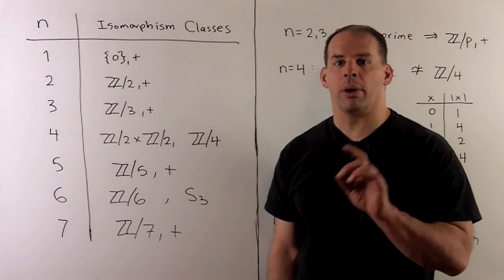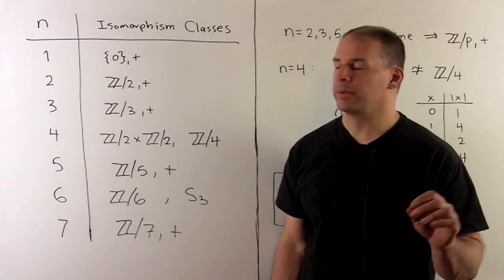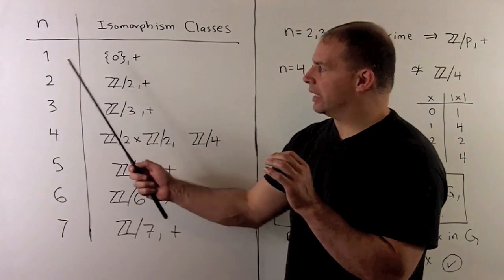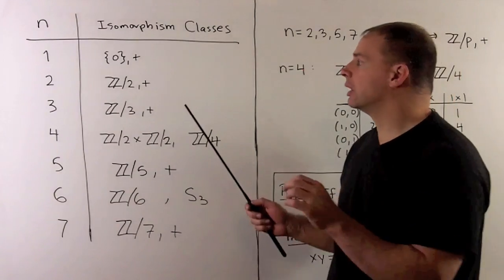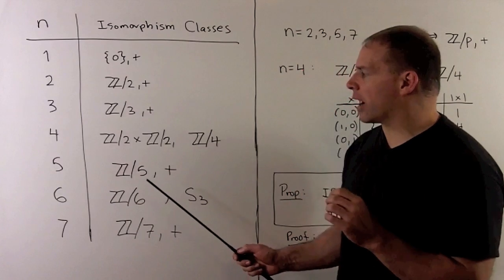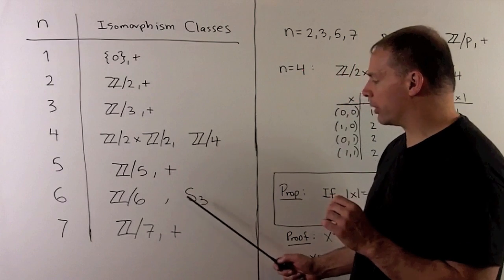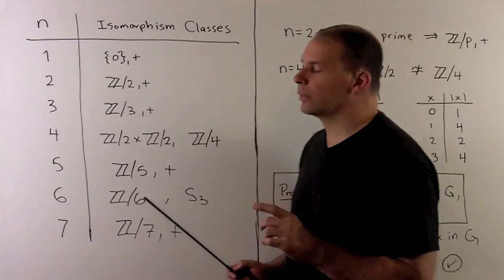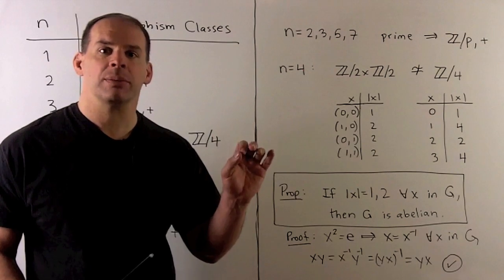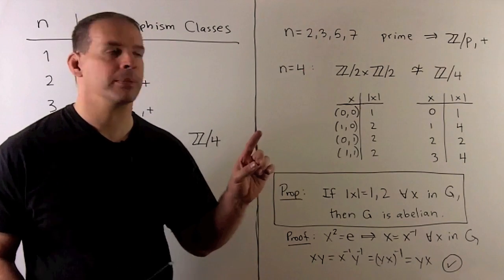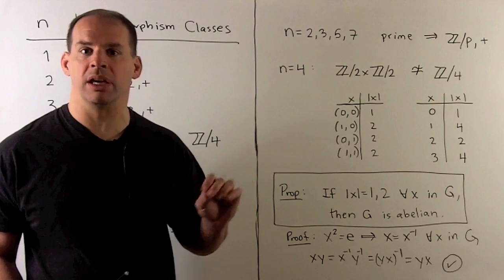Here's the answer to our main problem: the isomorphism classes for groups of order less than or equal to 7. In our list, each entry includes the cyclic group of order N, i.e., Z mod N under addition. When N equals 4, we have the extra class of the direct product of Z2 with itself. When N equals 6, we have the extra class of the symmetric group on three letters. For N equal to 2, 3, 5, or 7, the order is prime, and there's only one class — the group must be isomorphic to Z mod P under addition.